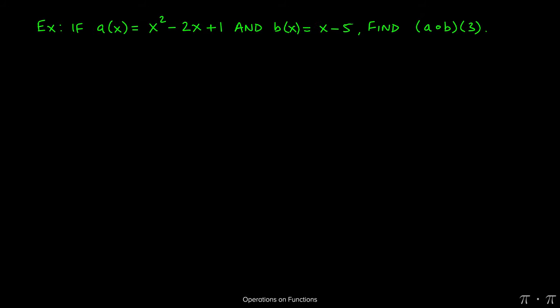Another way to read the same question is a circle b of 3, because that composition symbol does look like a circle, but 'composed of' is the right way or the more appropriate way of saying this. So find a composed of b of 3.